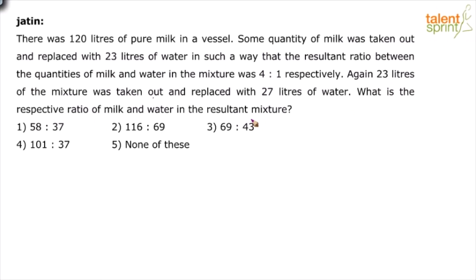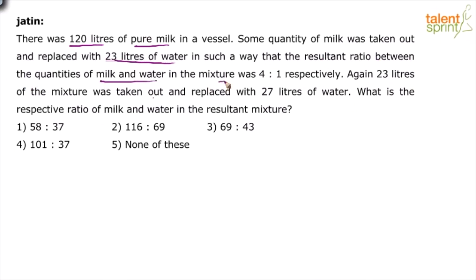See what happens. 120 liters of pure milk is there. We have removed some quantity of milk — how much is not given to us — but some quantity was taken out and replaced with 23 liters of water, in such a way that the resultant ratio between the quantities of milk and water in the mixture was 4 is to 1 respectively.